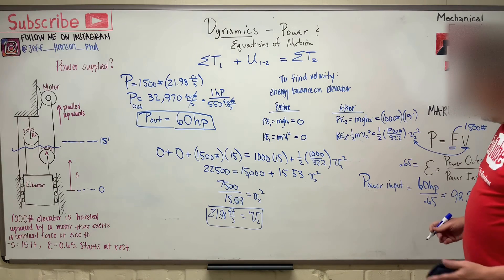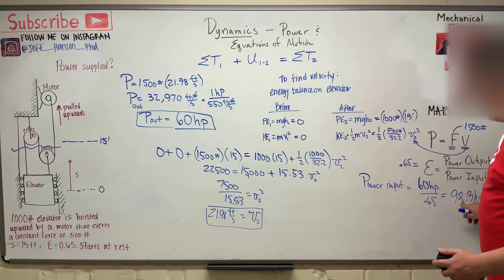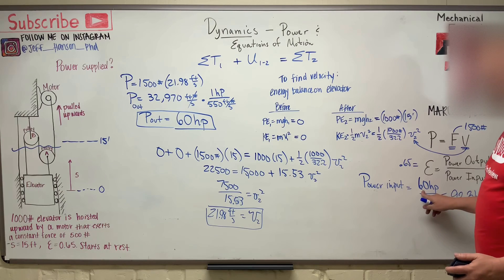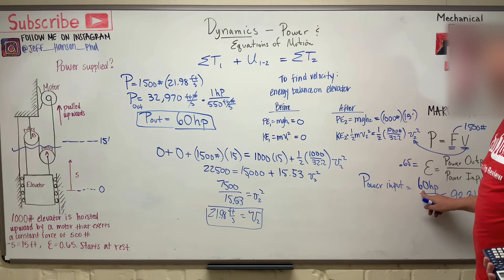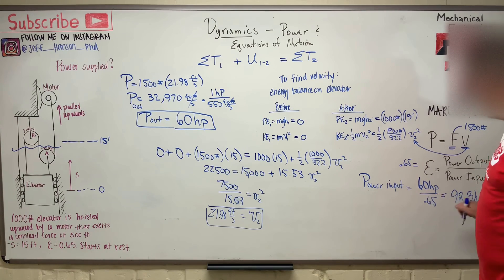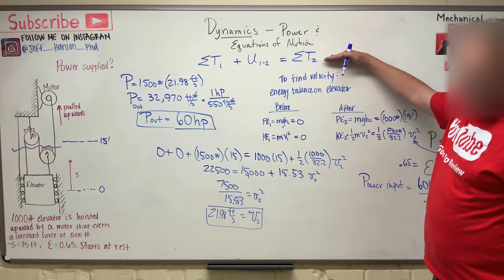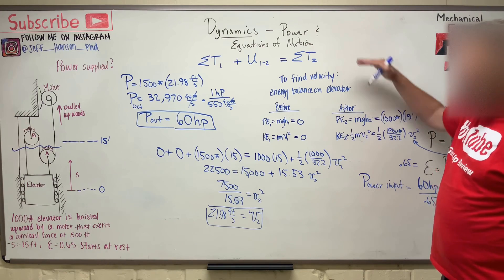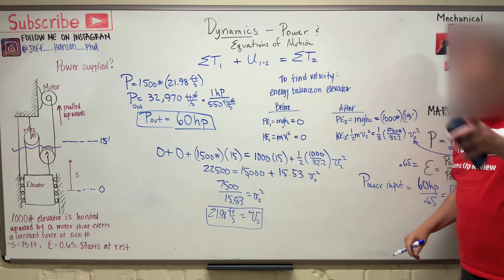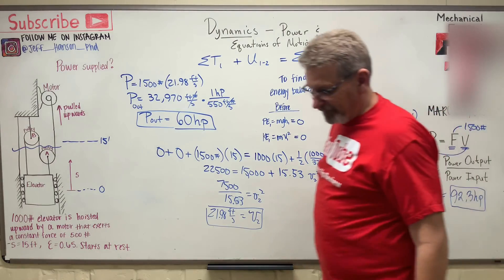And again, we knew that the power input is way more than the power output because there's losses in the system. That's what the whole efficiency thing is all about. So there you go. Another kind of example using our energy balance equations. So I hope that makes sense. I hope it helps. We'll see you next time. Thank you.